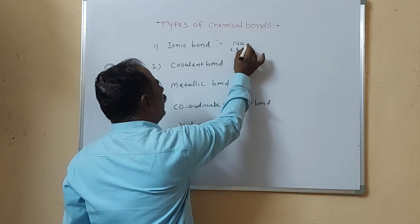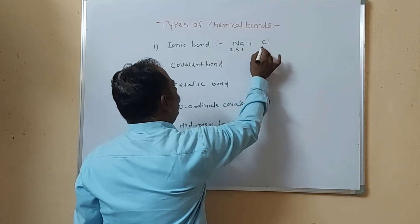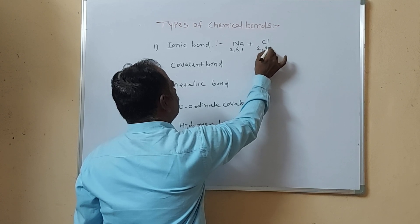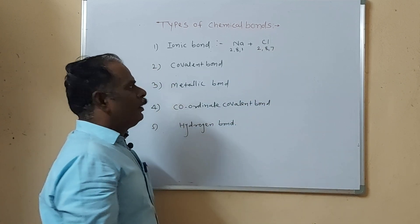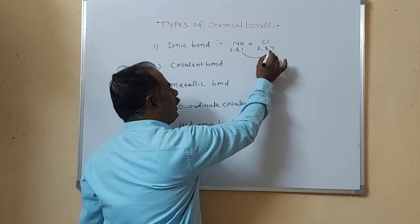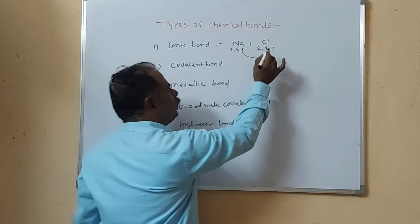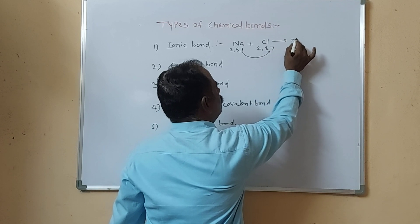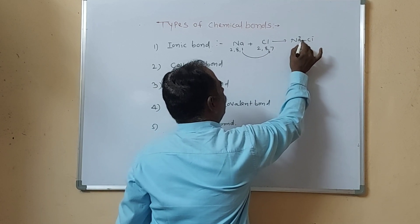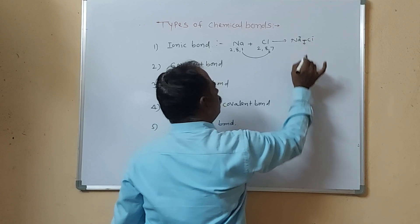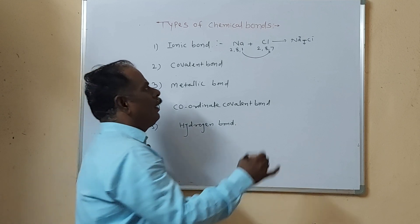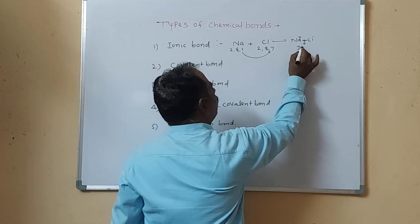Chlorine is 17, 2, 8, 7. Sodium gives 1 electron to chlorine to complete its octet. Sodium becomes a cation and chlorine becomes an anion. The electrostatic force of attraction between them forms the ionic bond.